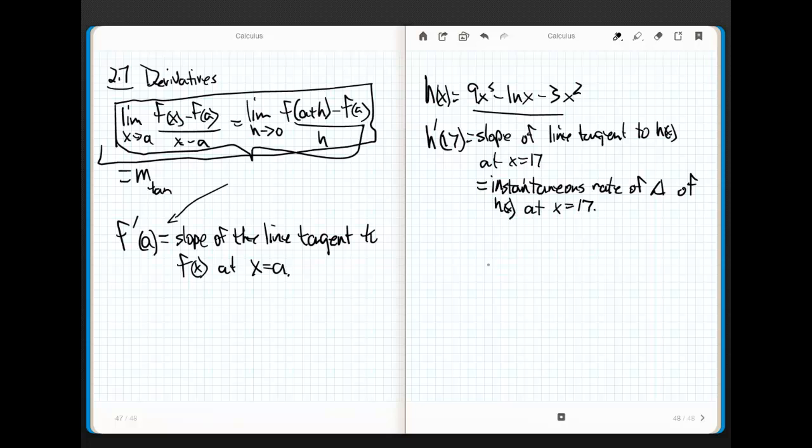So think about that in your brain. If you're looking at something and you're like, what does h'(17) mean? Well, the first thing that should pop into your head is, it's the slope of the line tangent to h at x equals 17. Oh wait, but it's also the instantaneous rate of change of h at x equals 17. Oh wait, it's also referred to as the derivative of h at 17. So all of those phrases, all of those terms are going to have to be interchangeable. You're going to have to be fluent.